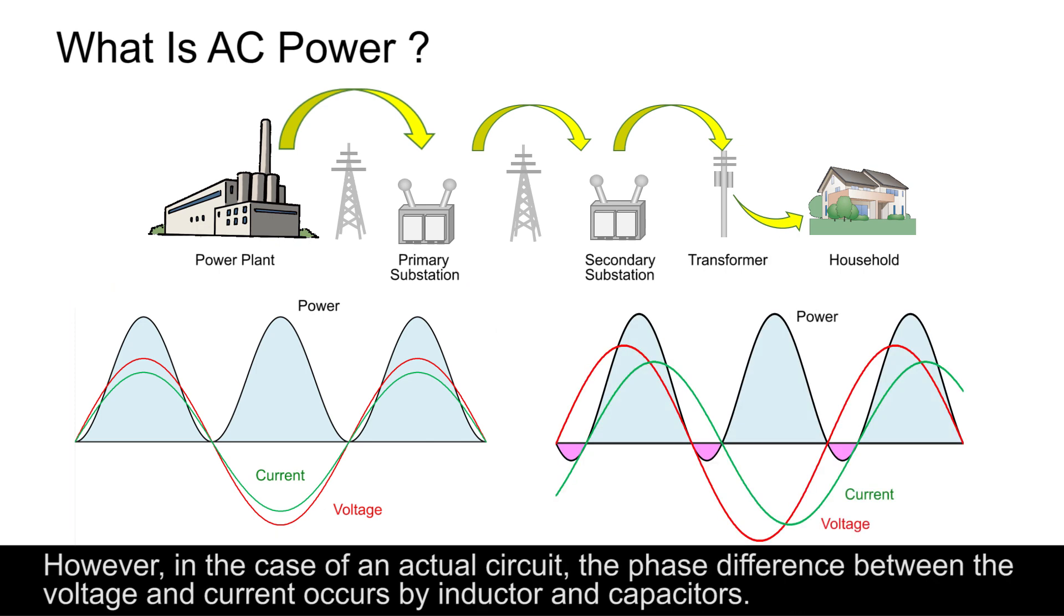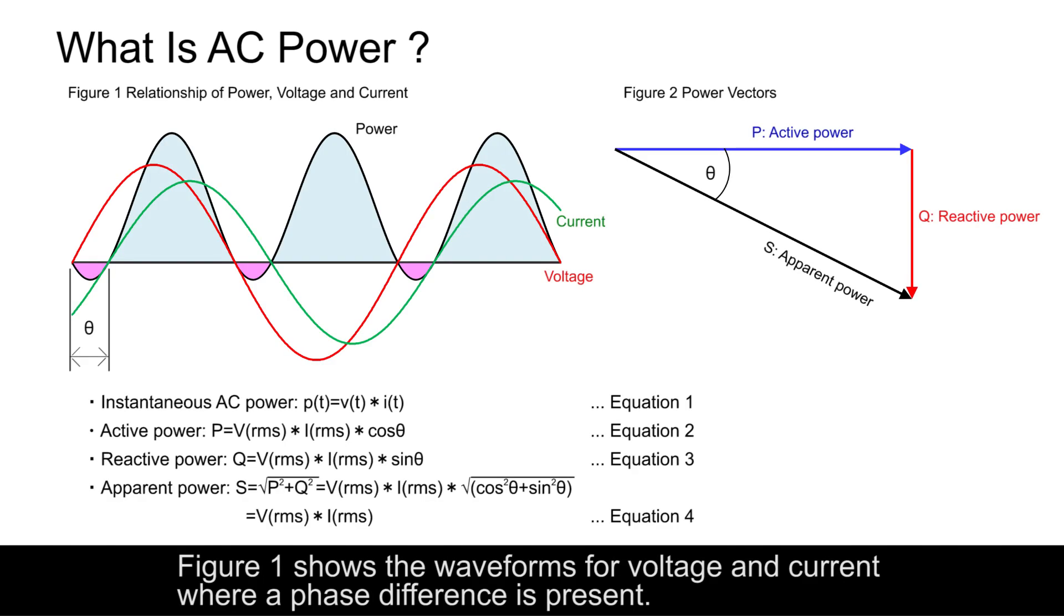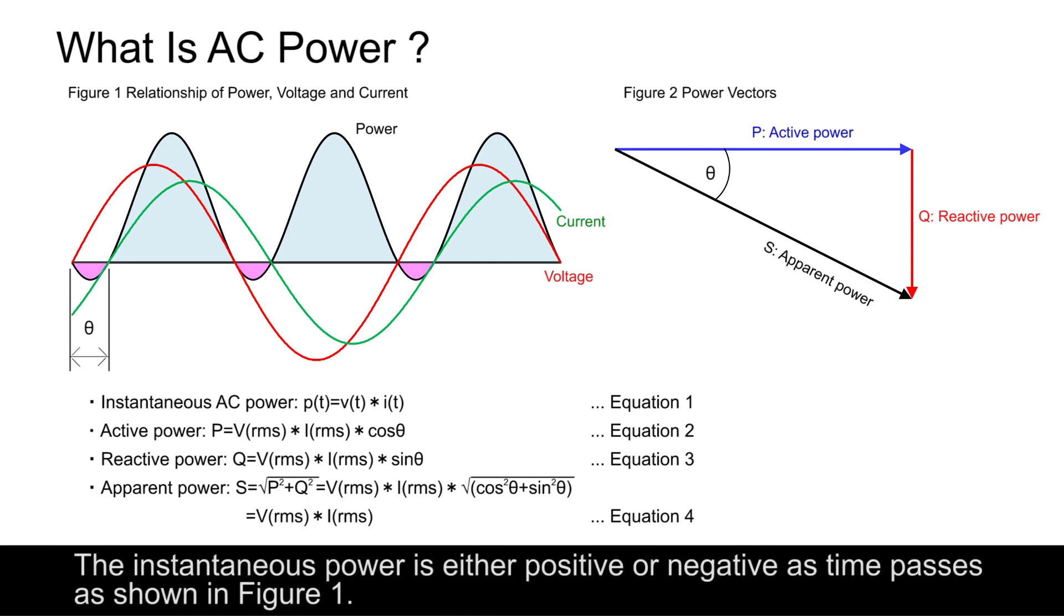However, in the case of an actual circuit, the phase difference between the voltage and current occurs by inductor and capacitors. Figure 1 shows the waveforms for voltage and current where a phase difference is present. The instantaneous power is either positive or negative as time passes, as shown in Figure 1.